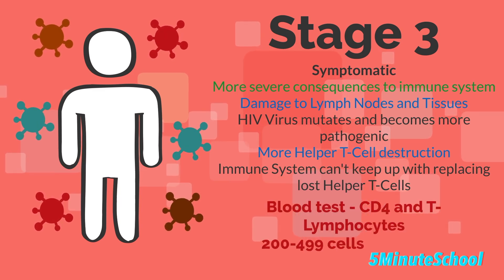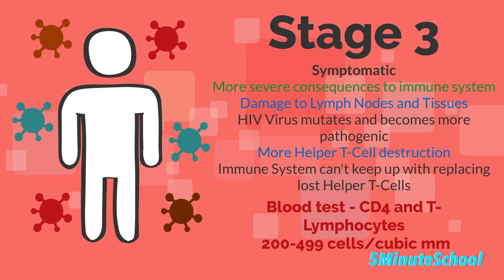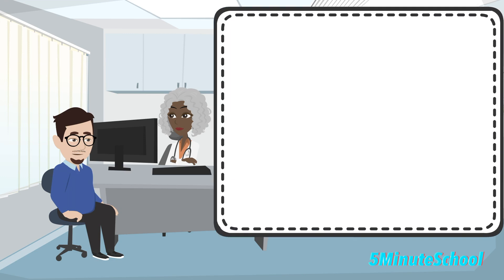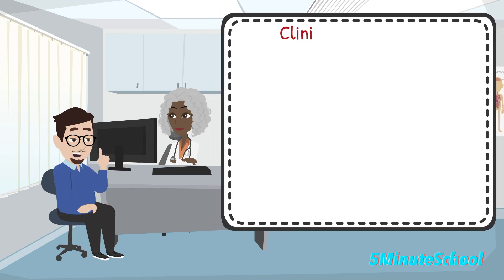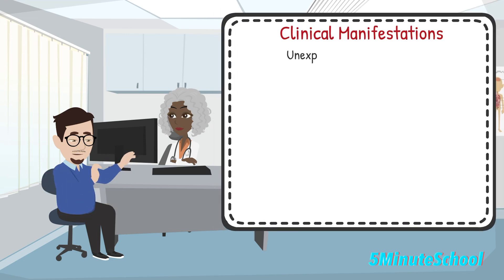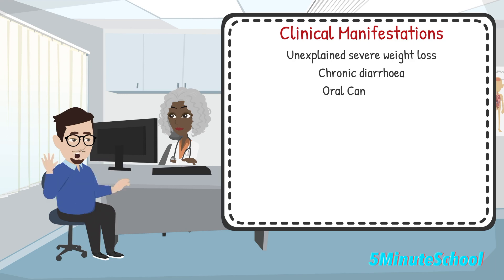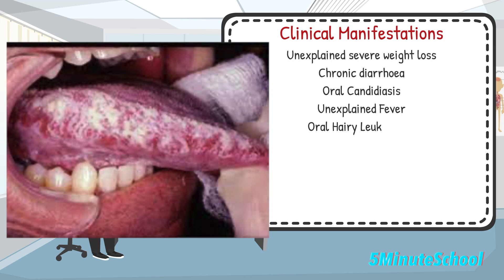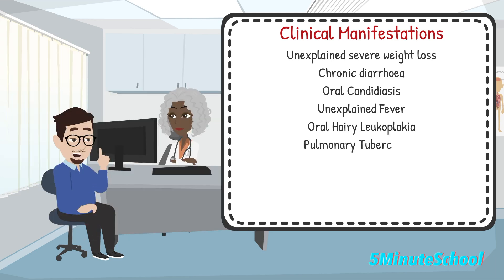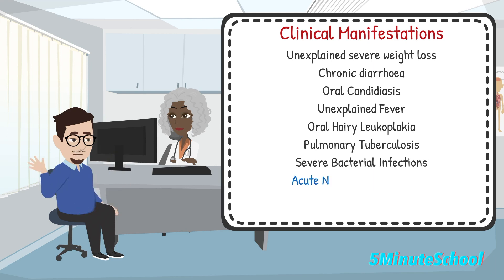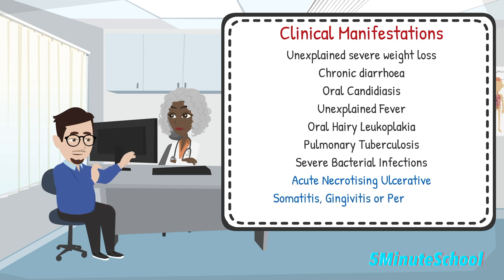At this point, CD4 cells and T lymphocytes are around 200 to 499 cells per cubic millimeter. Clinical manifestations of this stage include unexplained severe weight loss, chronic diarrhea for longer than a month, persistent oral candidiasis or thrush of the mouth, unexplained persistent fever, oral hairy leukoplakia, pulmonary tuberculosis, and severe bacterial infections like pneumonia or bone and joint infections. Acute necrotizing ulcerative stomatitis, gingivitis, or periodontitis could also occur, as well as anemia.